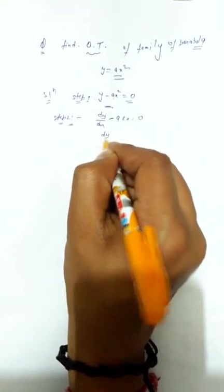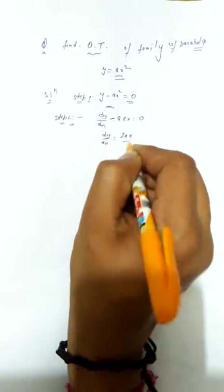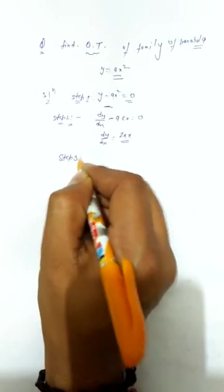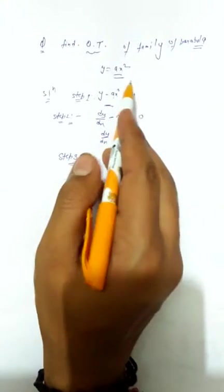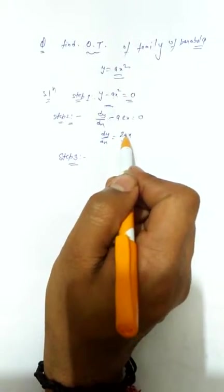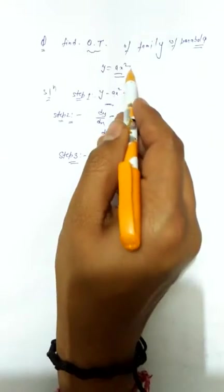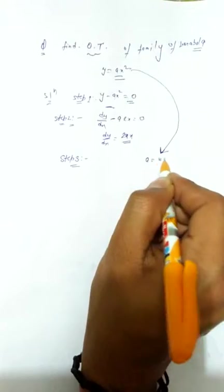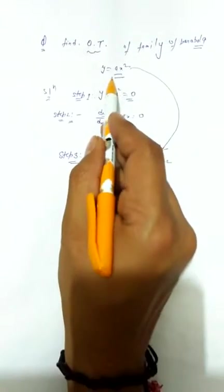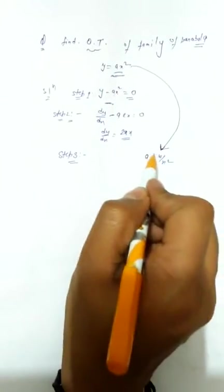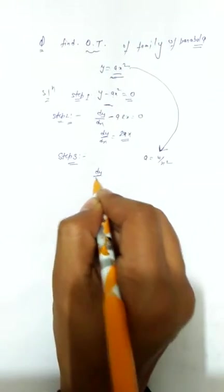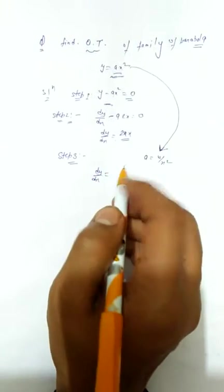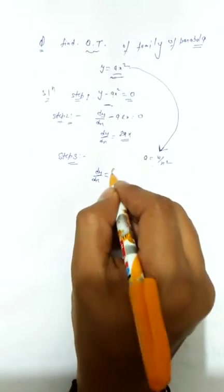Step 3: Eliminate the constant. From the function, we find that a = y/x². Now put this value of a into the differential equation. This gives dy/dx = 2(y/x²)(x), which simplifies to dy/dx = 2y/x.